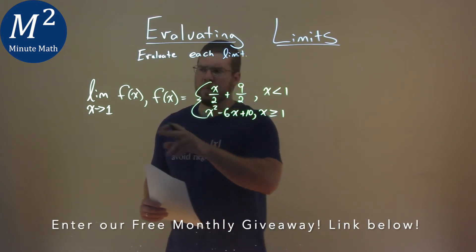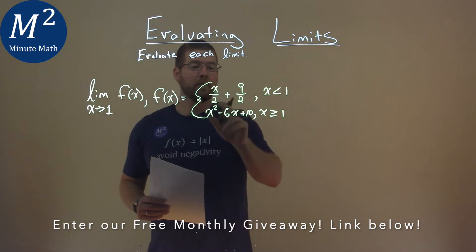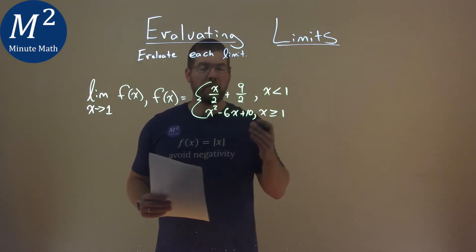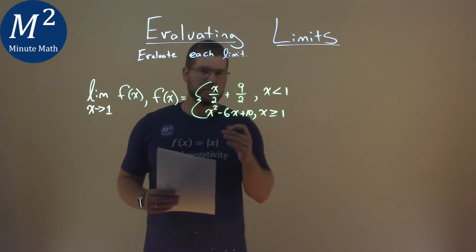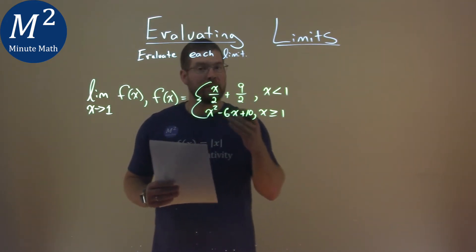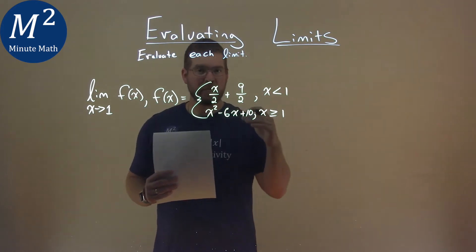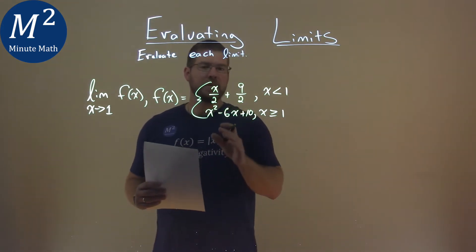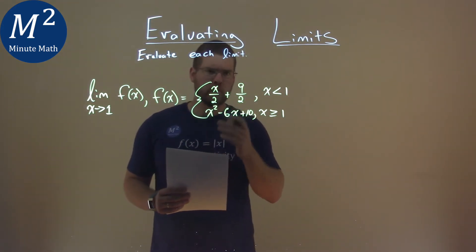So what I'm going to do now is plug in x equals 1 for both of these functions. If they both equal the same value, then we can say our limit equals that. If they have different values, that means they're approaching two different values, so our limit won't exist. Let's do that.